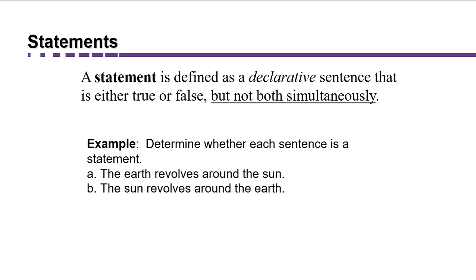Part B: The sun revolves around the earth. Even though that's false, it's still considered a statement. Remember, statements can be true or false as long as they're not both simultaneously, and it is a declarative sentence. Part C: One plus two equals three. Although this sentence is written in mathematical symbols, it is a declarative sentence, and we can determine if it's true or false, so it's a statement as well.